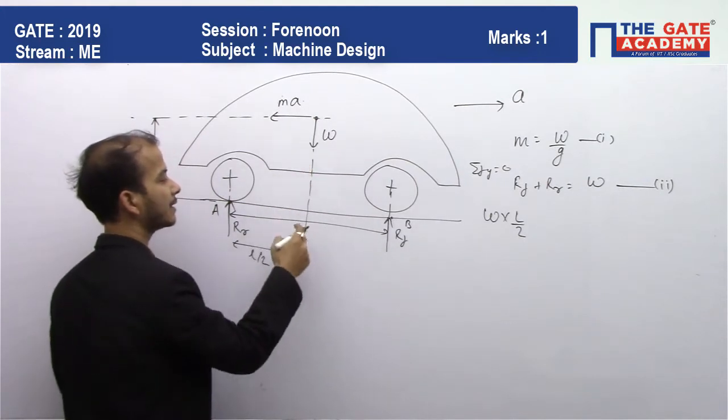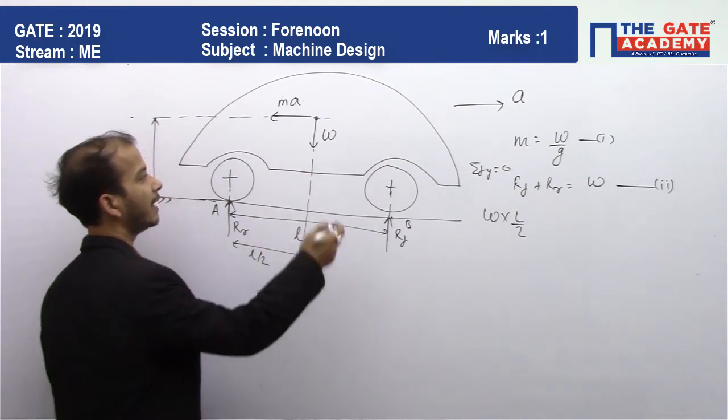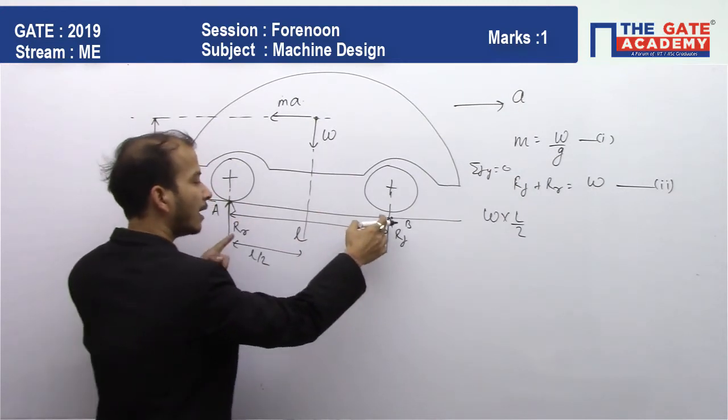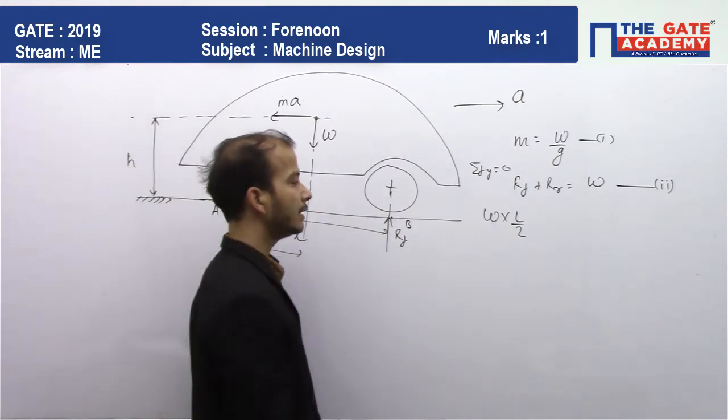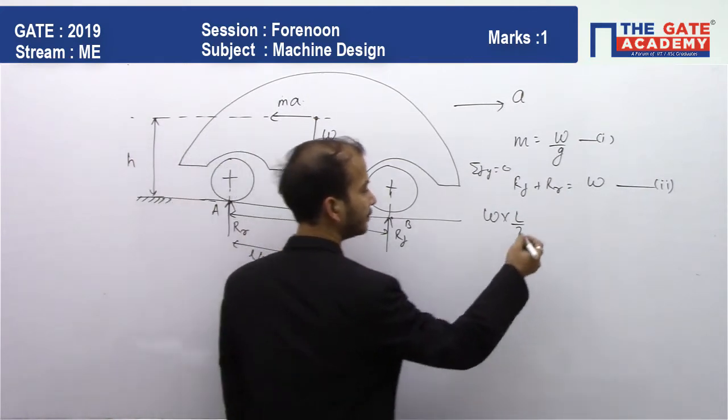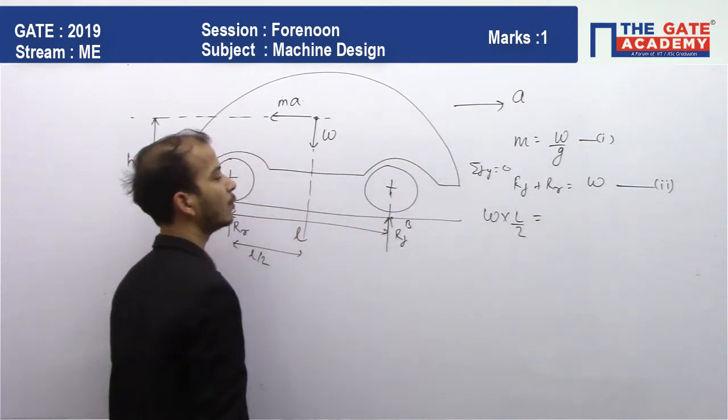Net moment zero equals net clockwise moment. So we can write W times l by 2, because the center of gravity is at the center between the two tires. This is the length of the moment arm, l by 2. This is the net clockwise torque.